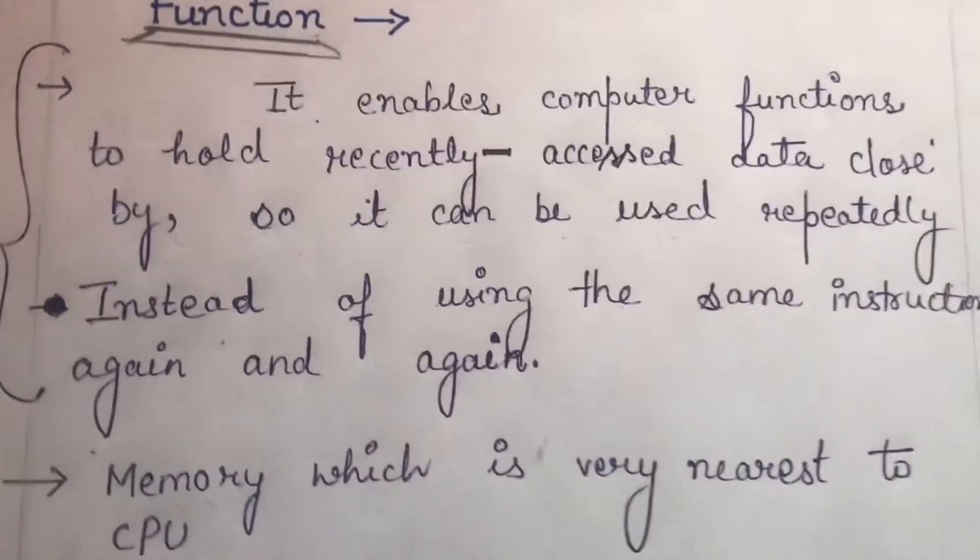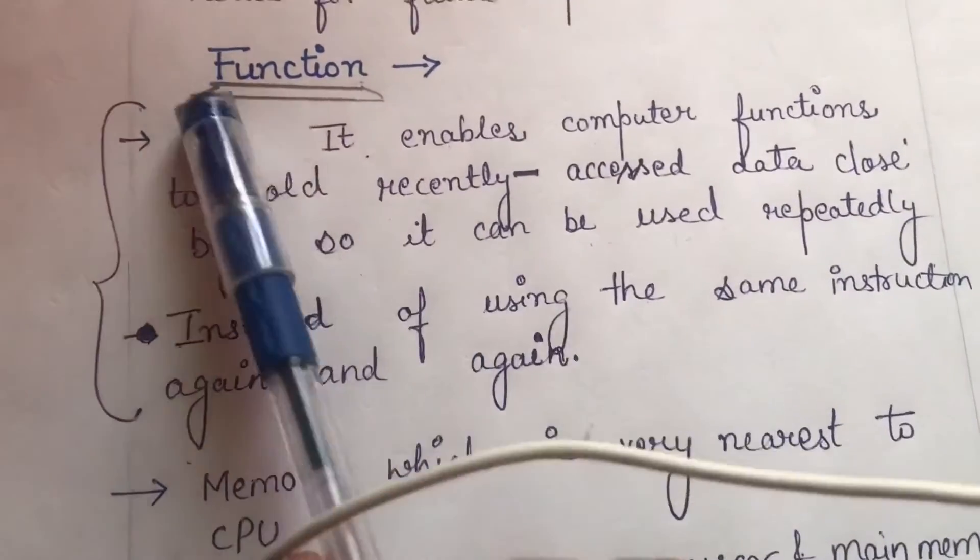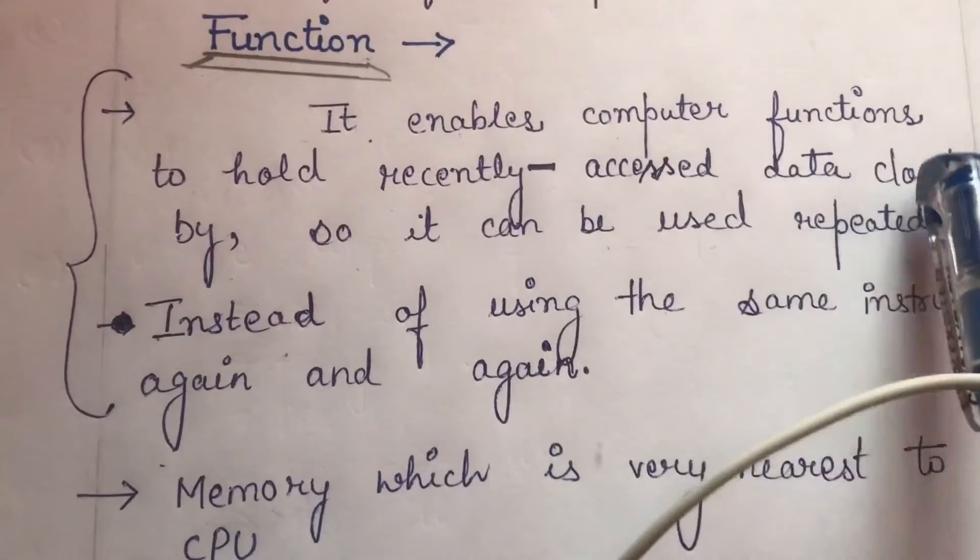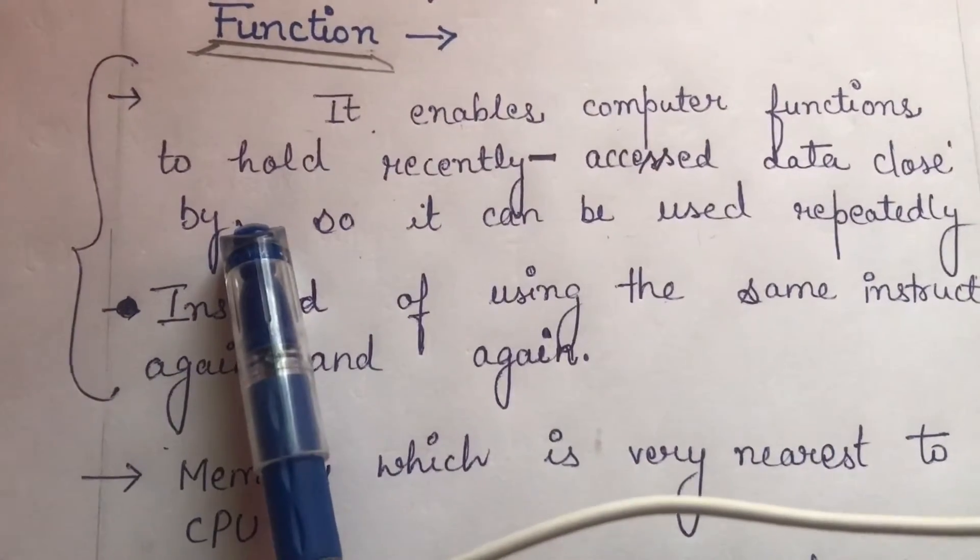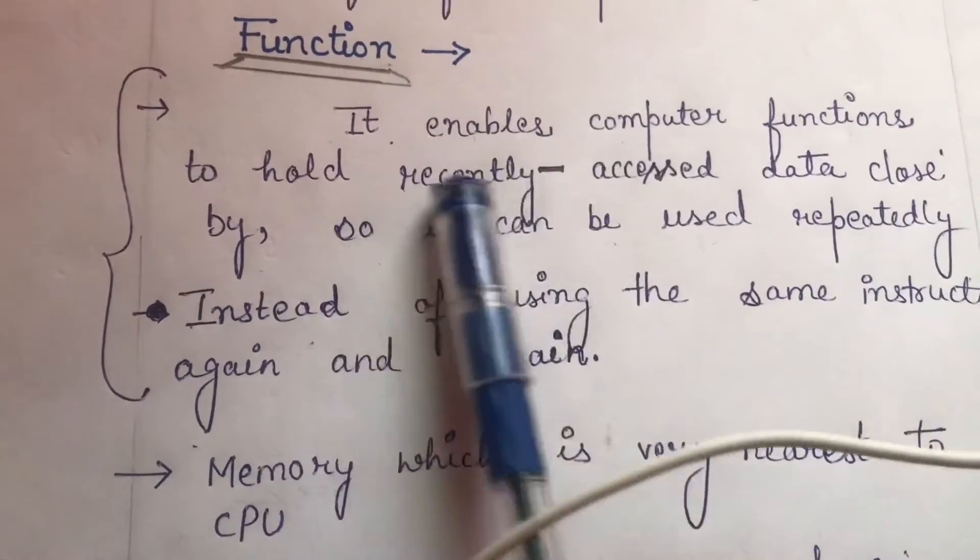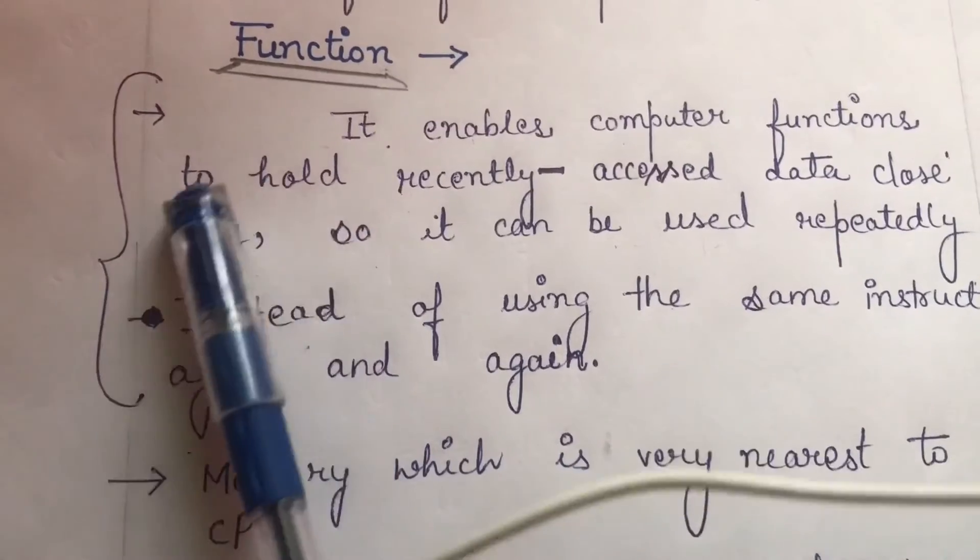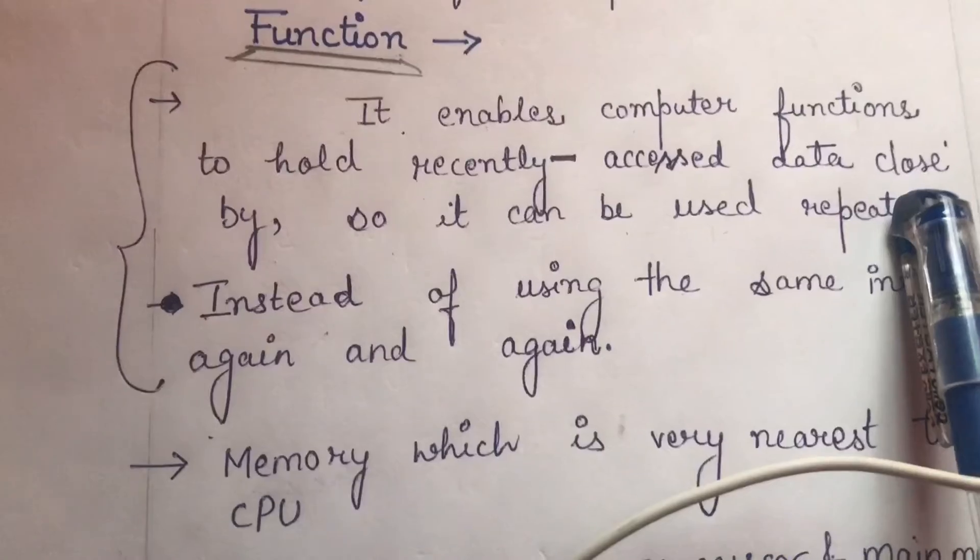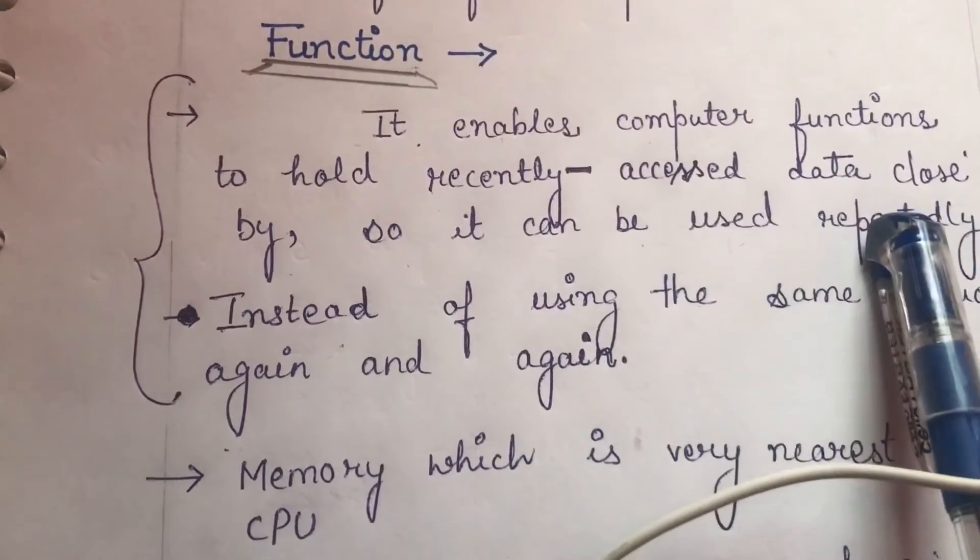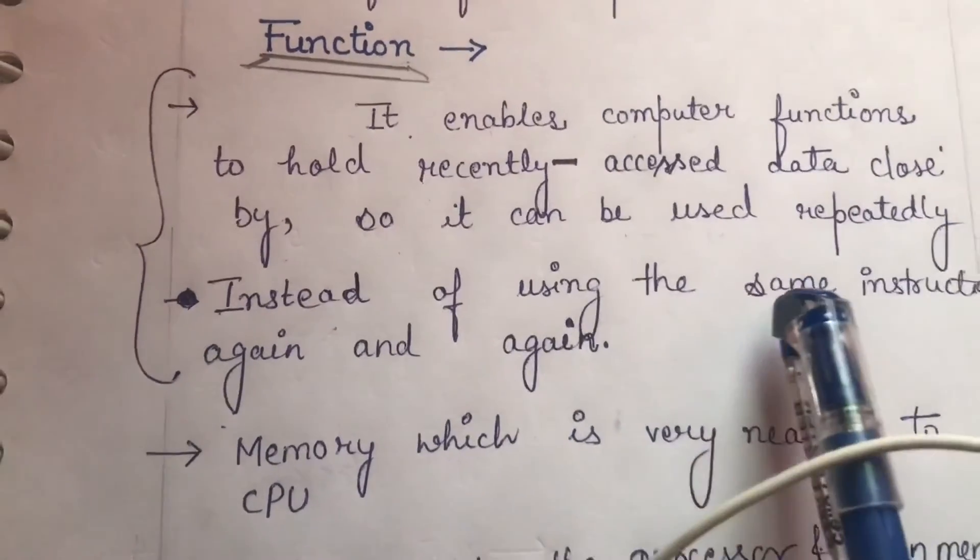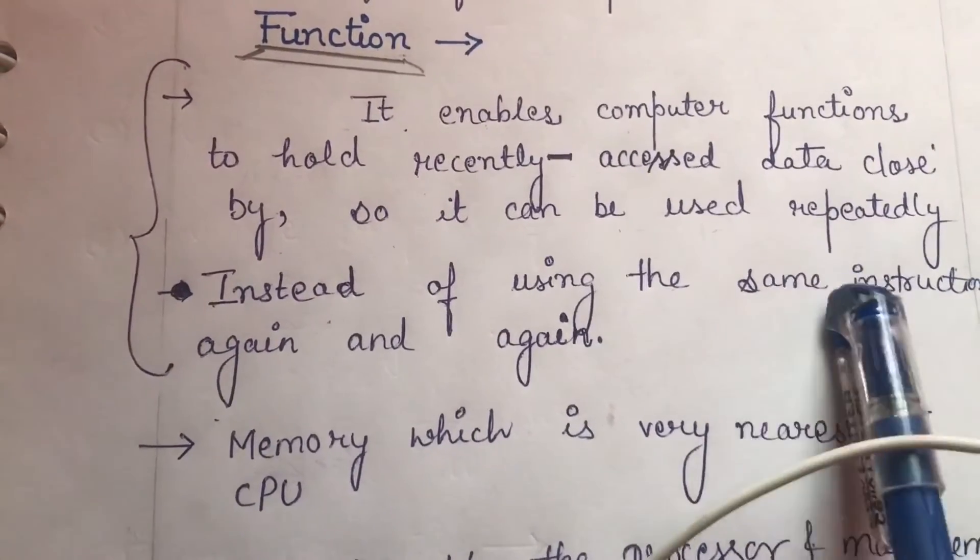Now let's move forward to its function. It enables computer functions to hold recently accessed data close by. This means that computer functions keep the data we have recently accessed nearby, close by, so it can be used repeatedly. Because the actions we have recently done, we might do them again and again.